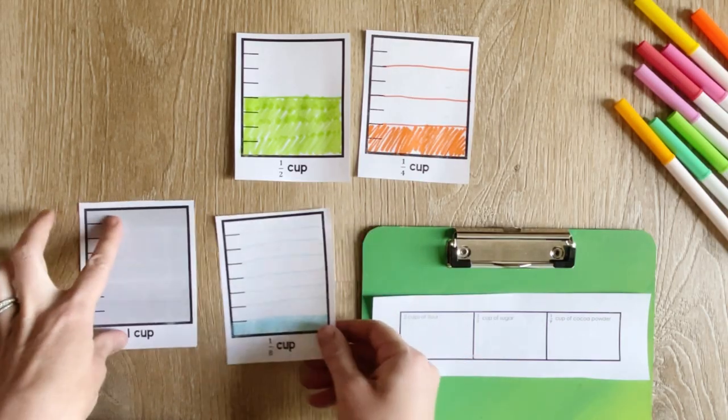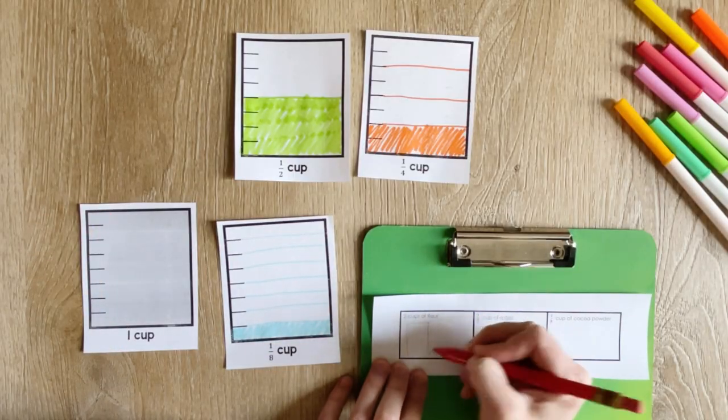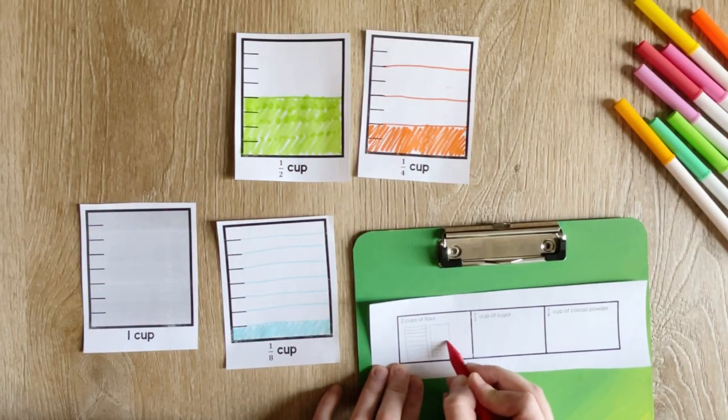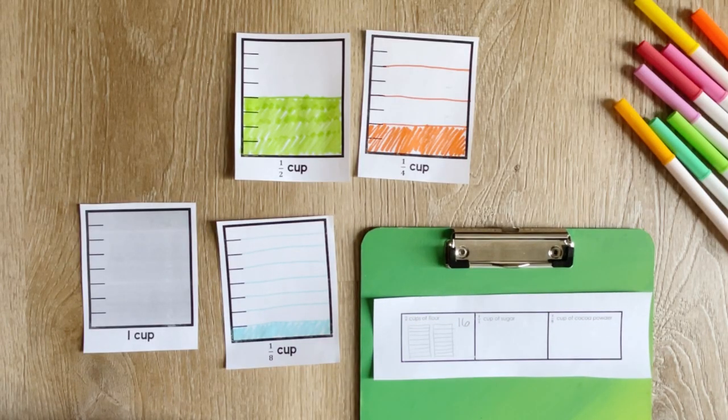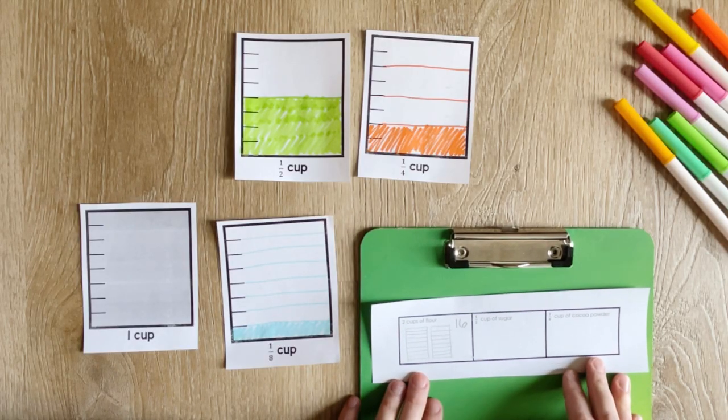So let's sketch it out. To fill up one cup, we're going to have to use our eighth cup eight times, and then another eight times to fill up the second cup. So it takes 16 of our eighth cups to make two cups of flour.